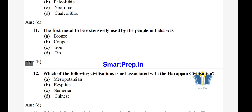Question 12: Which of the following civilizations is not associated with the Harappan civilization? The right answer is option D, Chinese civilization.